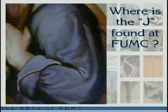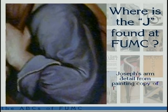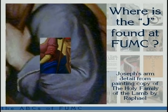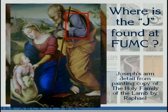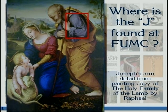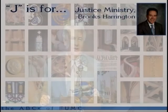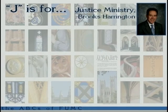The J — I recognize that. It's one of the paintings in the hall — it's Joseph's arm from The Holy Family of the Lamb by Raphael. We have a wonderful resource with all the paintings in the hallways, and these are accurate original reproductions. J is for the Justice Ministry — Brooks Harrington does a wonderful job in a very unique ministry to the downtown population of Fort Worth.